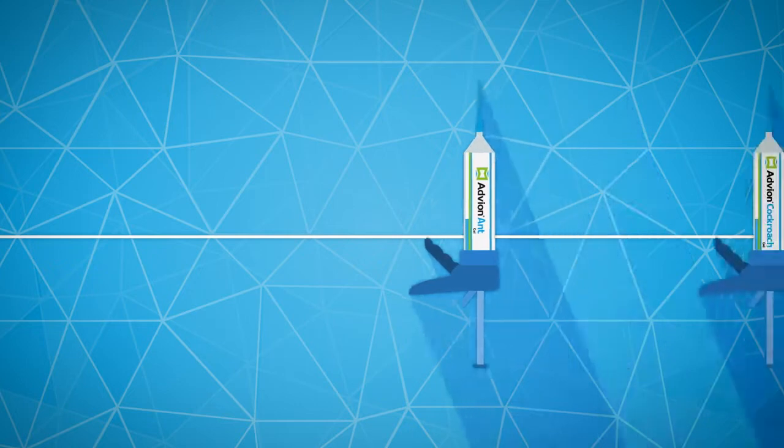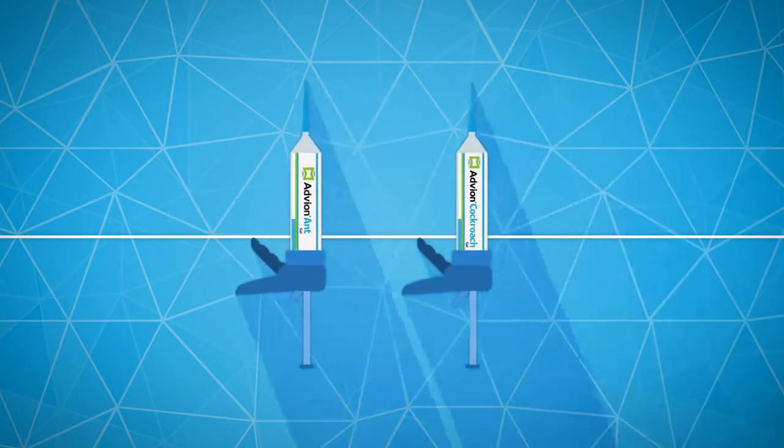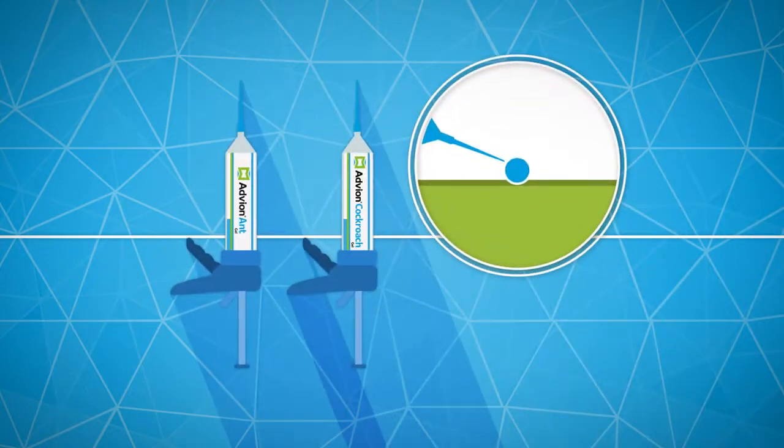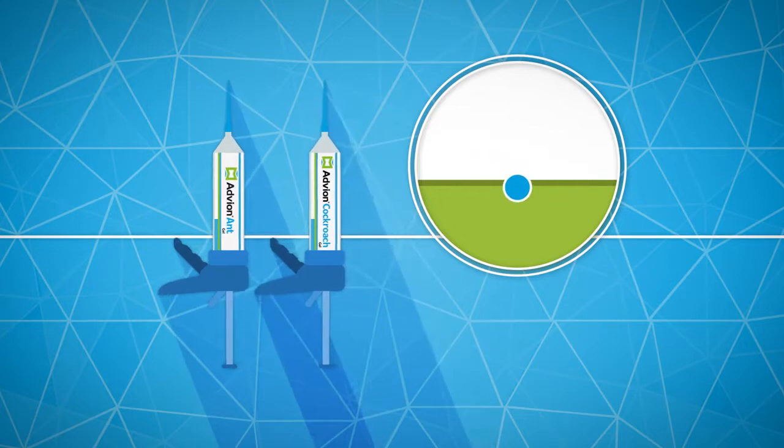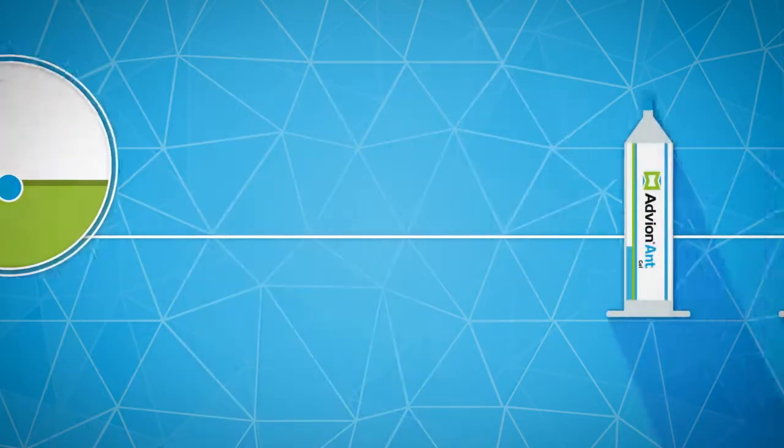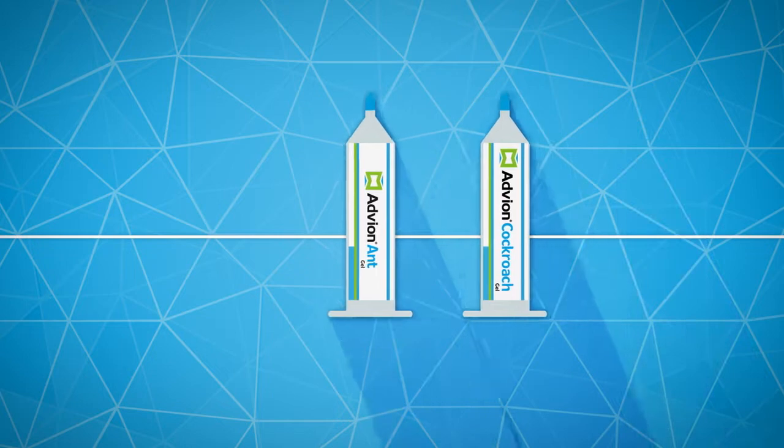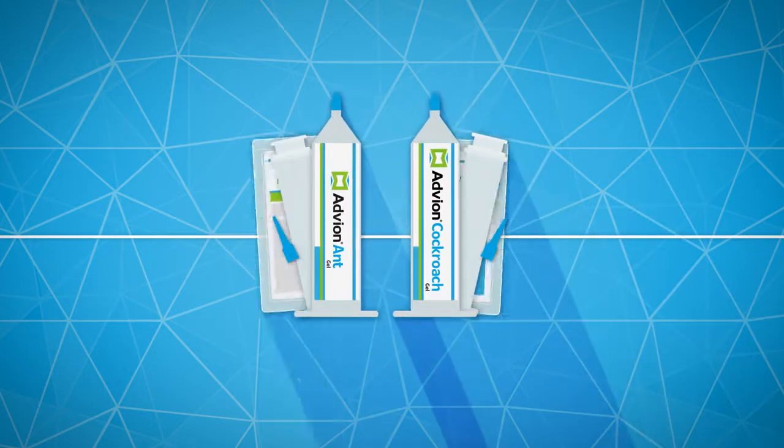Application. The application of Advion Ant or Cockroach Gel Bait is very easy when using a bait gun. The cartridges are compatible with any standard bait gun commercially available. Advion can also be applied by using the plunger and the tip provided in the package.